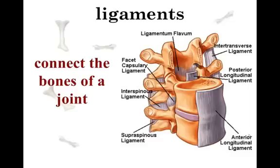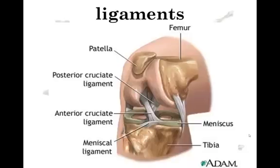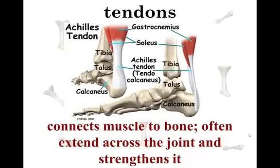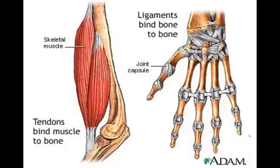The ligament, as we've already mentioned, connects bone to bone. This is showing you some ligaments on your vertebrae and your spine, and here are ligaments in your knee connecting bone to bone. A tendon — white and cord-like — connects a muscle to the bone. Probably the most familiar one is the Achilles tendon, on the very back of your heel, connected to your heel bone called the calcaneus. Here's a picture showing ligaments on the right and tendons on the left.